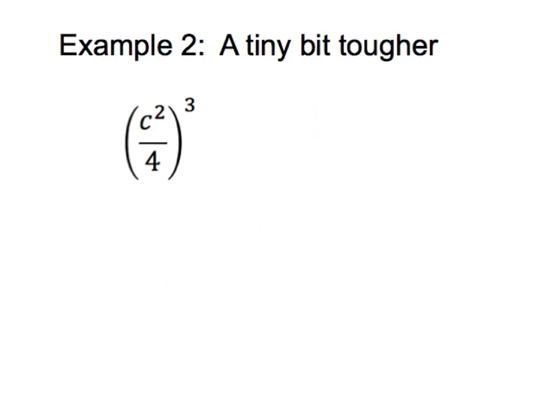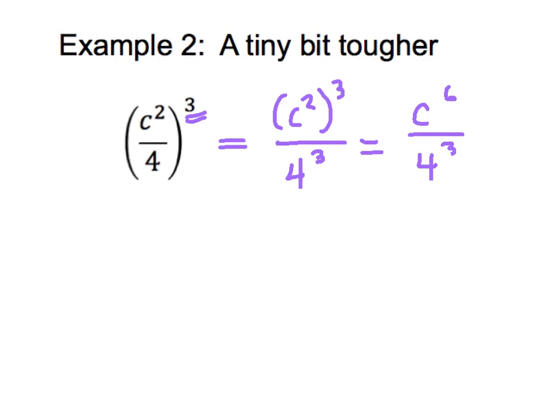Please write down example two. This one's just a little bit tougher. We're still going to apply that same rule where our outer exponent applies to everything in our numerator and everything in our denominator. So that means we're going to have c squared to the third power over four to the third power. In the numerator, if we remember our power to a power rule, c squared to the third power means we'll multiply our exponents, giving us c to the sixth power over four to the third power.